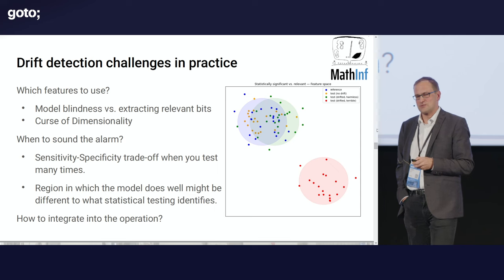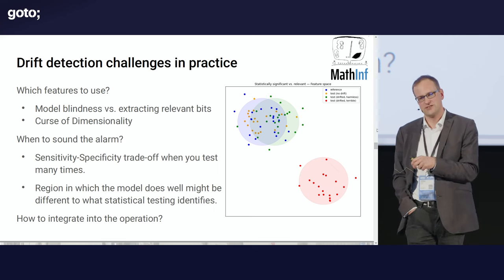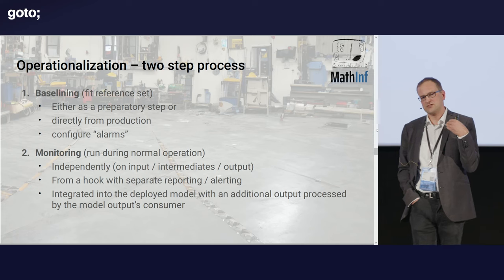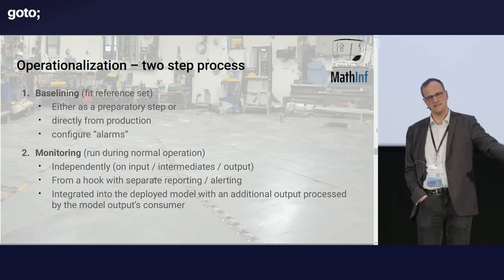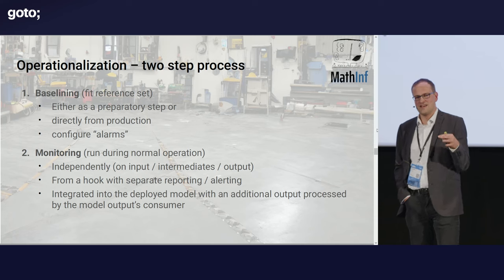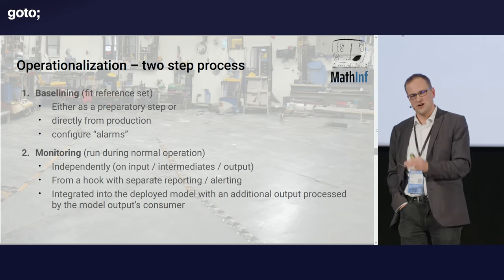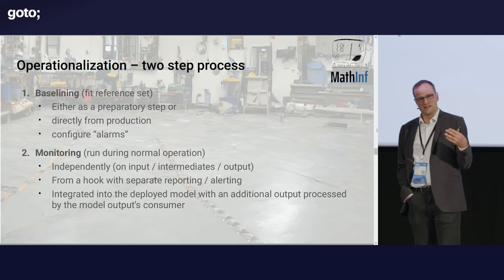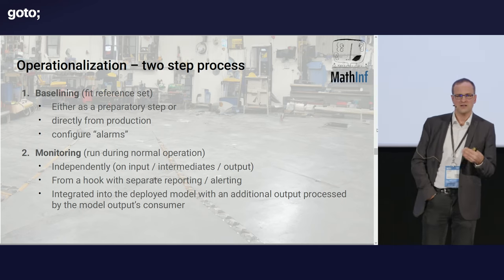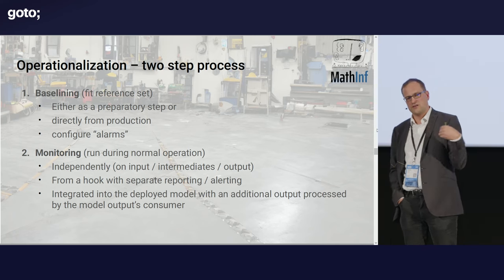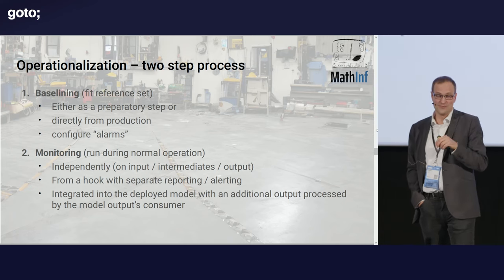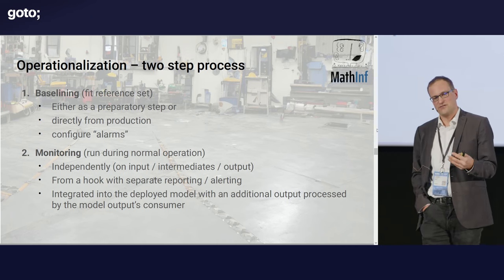These first questions — which features to use and how to calibrate — are all what we do when we set up our model, doing some baselining. We say: this is what we've tested, this is our reference distribution, and we configure the alarms. Then there's the second part, what we need to do ongoing: independently or in conjunction with running the model, we feed our inputs and the features we want to test, execute the test, and then — most difficult — what if the alarm goes off? What will we do?